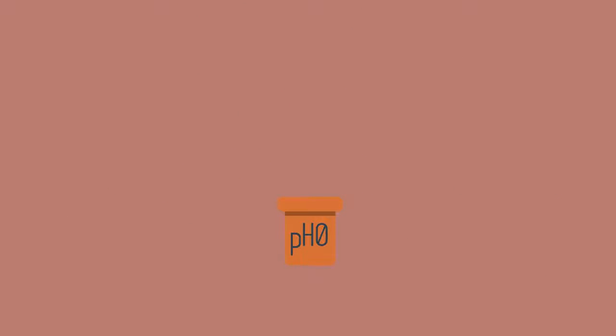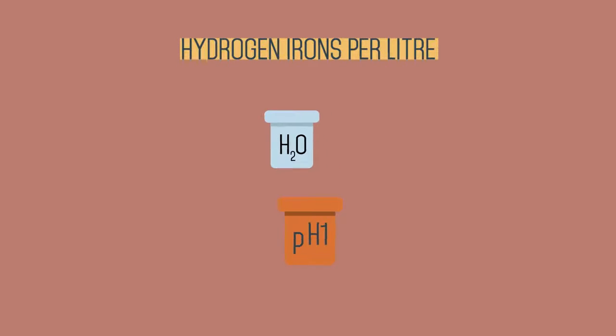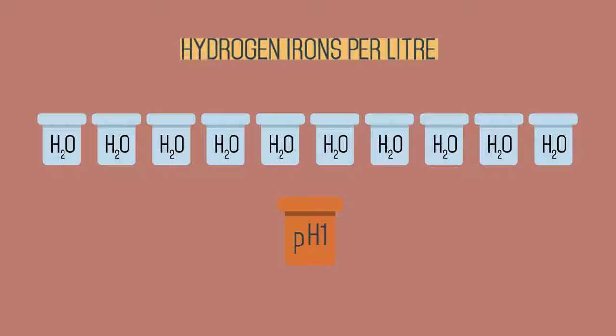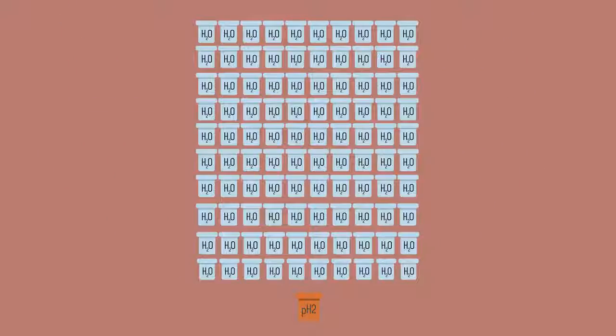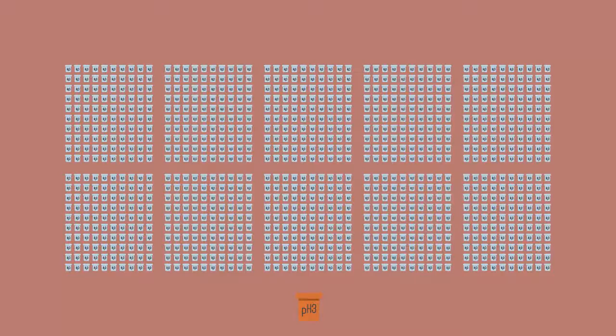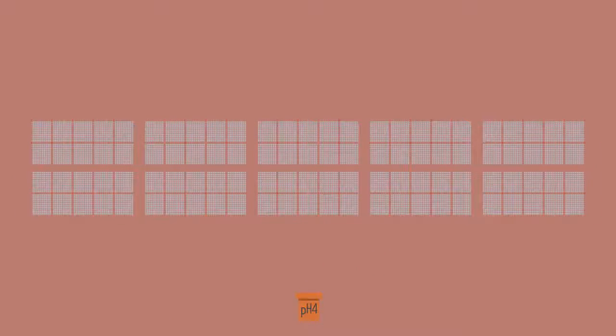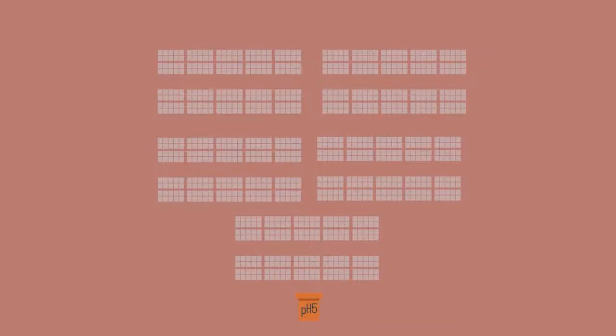For example at pH 0 there is one mole of hydrogen ions per litre. At pH 1 just one tenth of a mole of hydrogen ions per litre. Each increase of 1 unit of pH is a 10 fold reduction in hydrogen ion concentration.